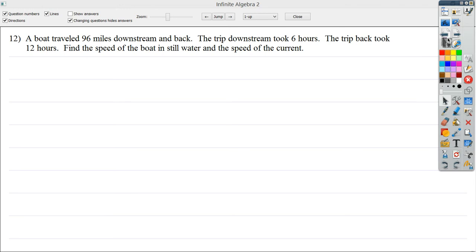So the question says, a boat traveled 96 miles downstream and back, so that would be 96 down and 96 back. The trip downstream took 6 hours. The trip back took 12 hours. Find the speed of the boat in still water, so without any current influence, and the speed of the current.